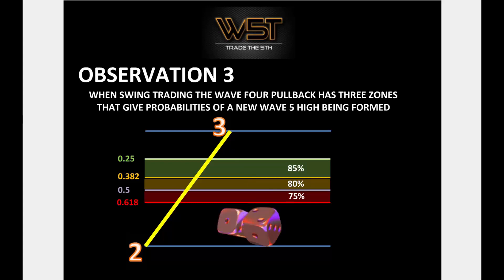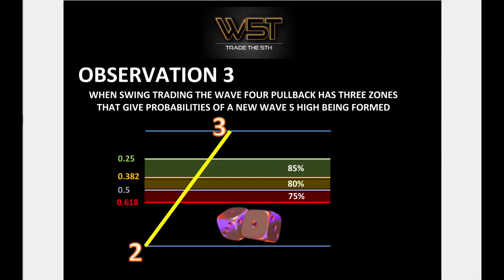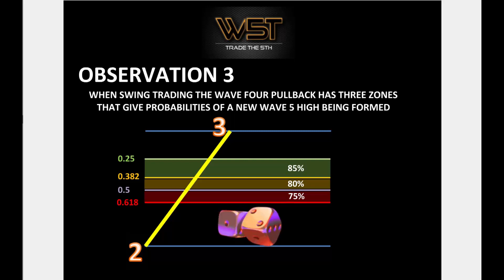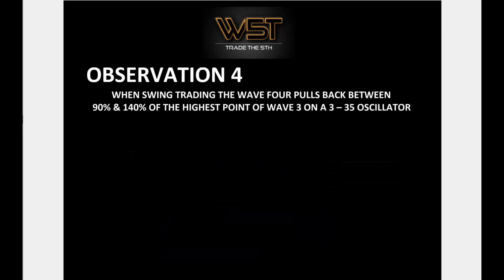The red zone gives a 75% probability. Anything below the red zone, you're rolling the dice a little — the probability gets too low. The wave four pullback has been too deep, and the chance of it going on to break the wave three high becomes too low. It's not a high-probability trade.